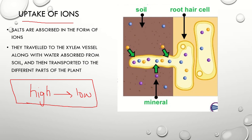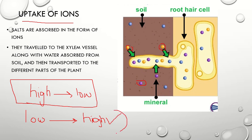In this picture you can see that we have ions present here, and for the absorption of mineral ions we need a specific process called active transport. In active transport, the concentration is very low, and with the help of ATP, molecules are absorbed from low to high concentration. This means we need a lot of energy for their absorption. So water moves with osmosis and ions are absorbed with active transport.